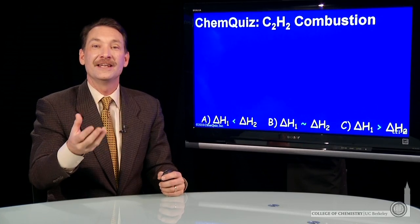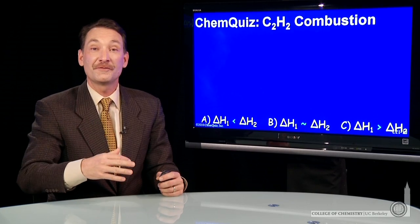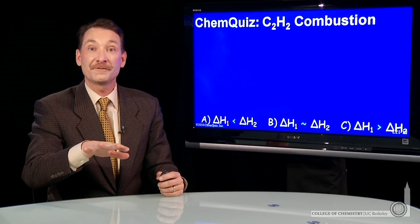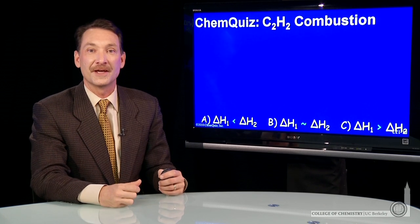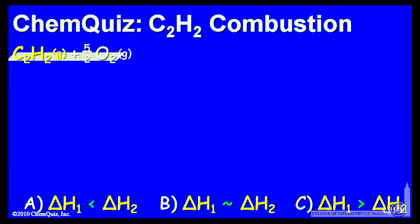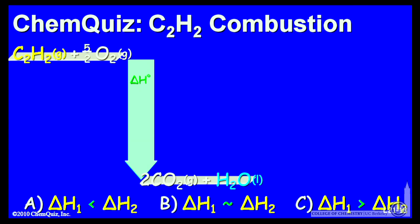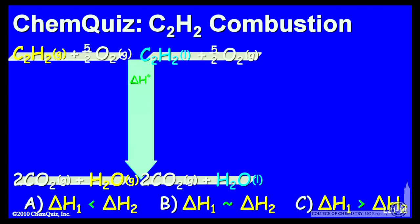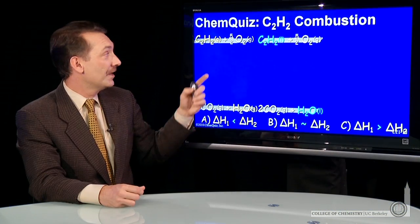We're burning acetylene in oxygen in a few different ways. So let's plot all the different phases and substances on a relative enthalpy scale. Here's gaseous acetylene and gaseous oxygen. And here's the products, gaseous carbon dioxide and liquid water. That's an enthalpy change that we could measure. But we're also talking about liquid acetylene and gaseous water, and those enthalpy changes. So how do those fit in on the relative enthalpy scale?